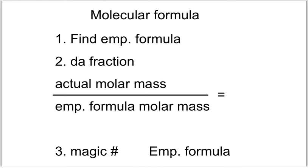This is a continuation of what we did in the earlier video. This talks about molecular formula. The molecular formula is how something actually exists in nature — what a molecule actually is in nature. The molecular formula can be reduced, and that's the difference between empirical and molecular.